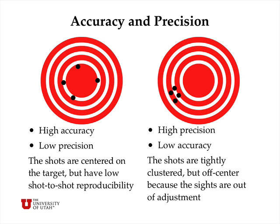We can make a rough analogy to target shooting. On the left-hand side, you see four places where a target has been hit. They're spread out and none is really in the center, but their overall average is pretty close to the center. We would say this represents high accuracy and low precision: the average value is close to the true value, but the measurements are spread out with low reproducibility.